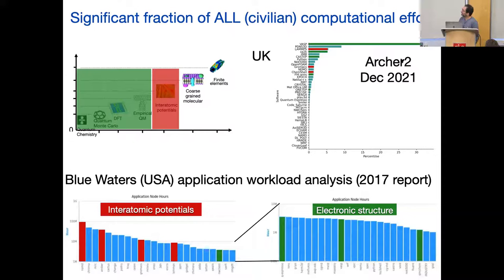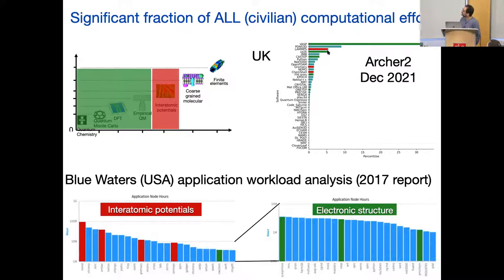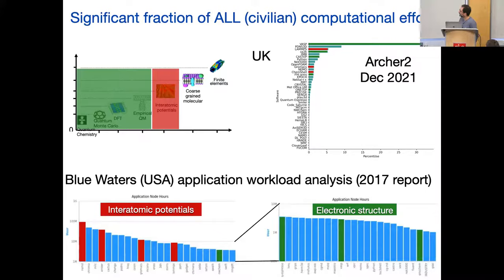This is the update — I downloaded this yesterday. Archer 2 is the successor of the UK HPC. Still 35% is a single code doing electronic structure calculation, with other green bits added; so again about 40% is electronic structure and about 8-10% molecular dynamics. The topic I'm talking about — how to do molecular dynamics accurately and fast — affects half of all civilian computer use in the US and UK.